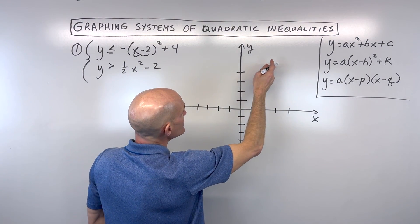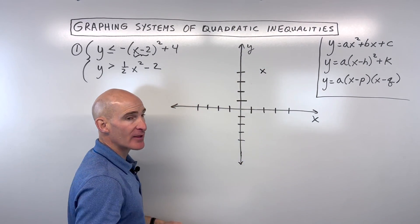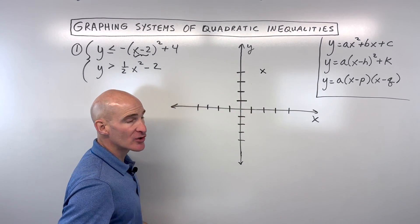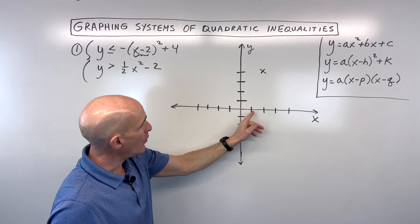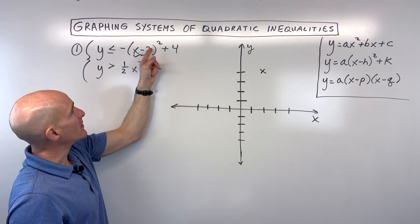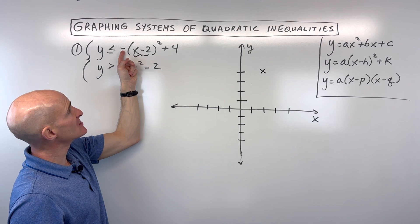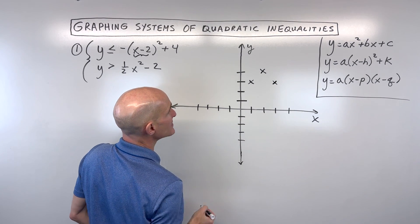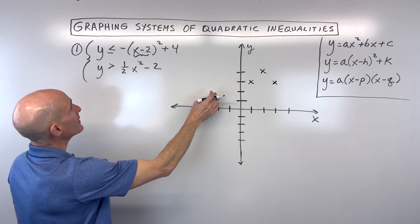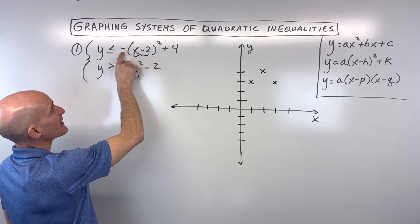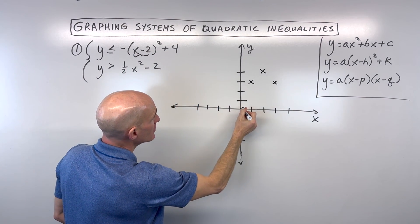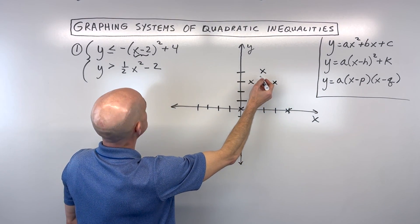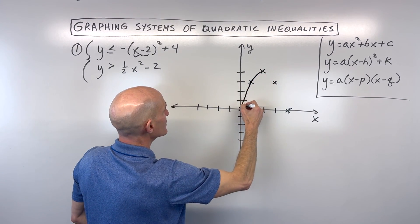Parabolas are symmetric about that vertex, about that axis of symmetry — the line that goes through the vertex. So by picking some points on either side, we can get a good sketch of our graph. For example, if I put one in: one minus two is negative one, negative one squared is one, times a negative is negative one, plus four is three. So we have a point there, and reflecting that over the axis of symmetry gives another point. If I put zero in, I get negative two squared is four, times a negative is negative four, plus four is zero. And I can reflect that over the line of symmetry at x equals two. Here you can see our graph is going to look something like this.